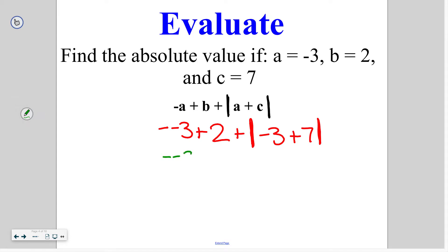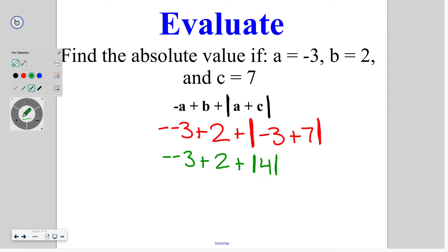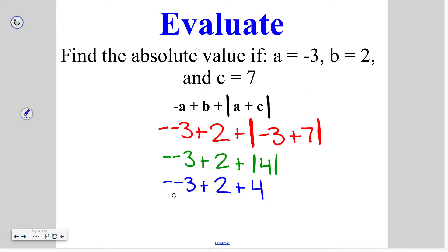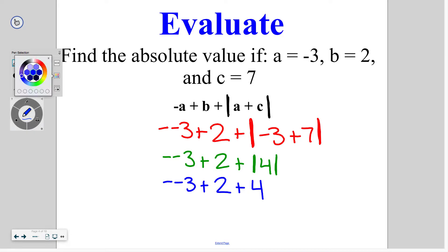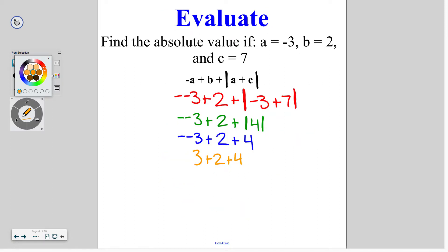So we've got negative, negative 3, plus 2, plus the absolute value of negative 3 plus 7, which gives us 4. Now I need to find the absolute value of 4. Since 4 is 4 spaces away from 0 on the number line, the absolute value is 4. So I have negative, negative 3, plus 2, plus 4. I've got a double negative out front — two negatives make a positive. So I now have positive 3 plus 2 plus 4. Following PEMDAS, 3 plus 2 is 5, plus 4, giving us a final answer of 9.